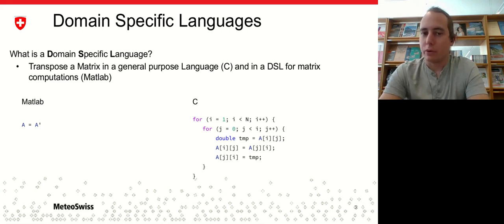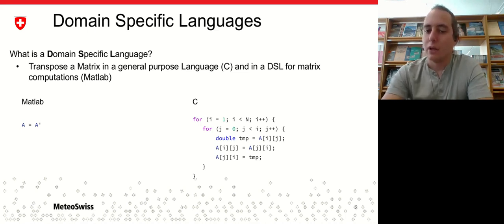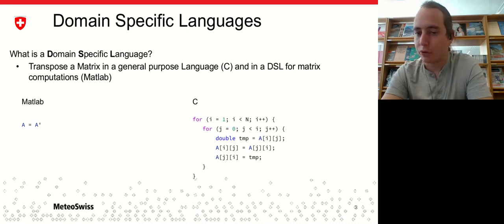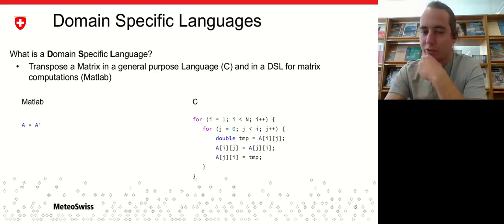One of the interesting parts about DSLs is that most anyone in here probably has used one in the past, maybe not being aware that they did so. Probably the most famous and successful DSL would be MATLAB, which is a domain-specific language for matrix computations. Since it's tailor-made for matrix computations, matrix computations can be very easily expressed. Transposing a matrix in place is just a equals a prime. If you would want to achieve the same feat in a more general purpose language, it would be much more verbose and quite error-prone.